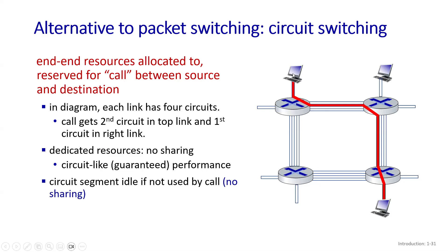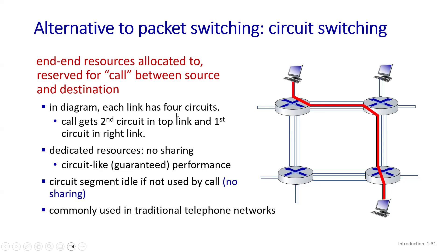In this circuit switching scenario, a user is assigned channel number two on one link, and circuit number one on the next link. Circuit switching is typically used in telephone systems and PSTNs. You get dedicated service, but you may not be able to use the full capacity of the link. If the circuit segment is idle with no call, the resources are wasted and other users cannot use them.